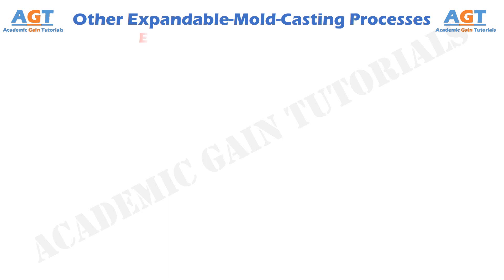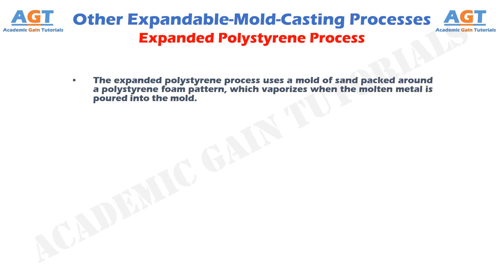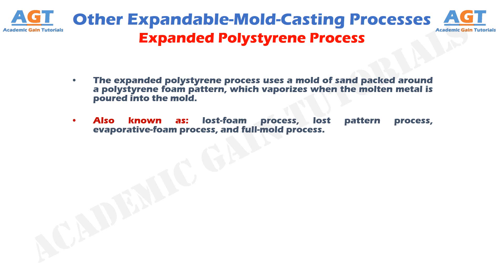The expanded polystyrene process uses a mold of sand packed around a polystyrene foam pattern, which vaporizes when the molten metal is poured into the mold. It is also known as the lost foam process, lost pattern process, evaporative foam process, and full mold process.